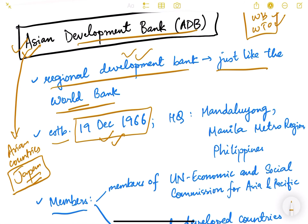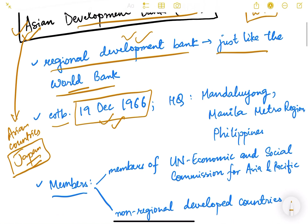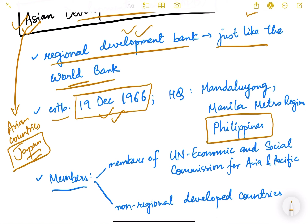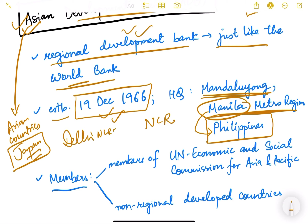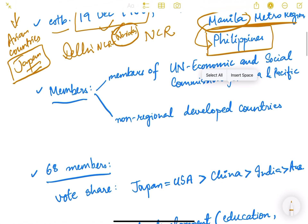The headquarter of the Asian Development Bank is in the Philippines, in the city of Mandaluyong. Mandaluyong is in the Manila Metropolitan Region — Manila is the capital of the Philippines. It's like a National Capital Region, similar to Delhi NCR, where Mandaluyong is like a Noida for Manila.